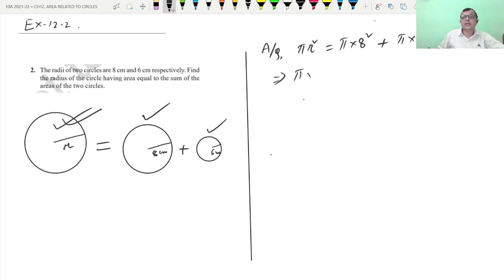Pi times r square. We take pi common: 8 square plus 6 square. From both sides, can we cancel pi? Yes, we cancel pi.